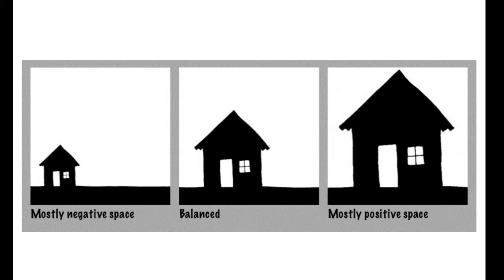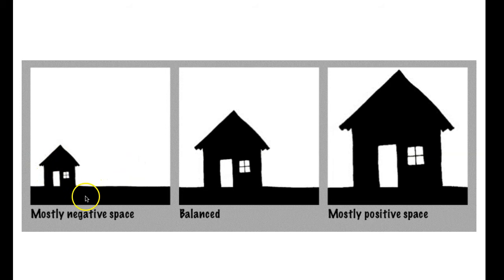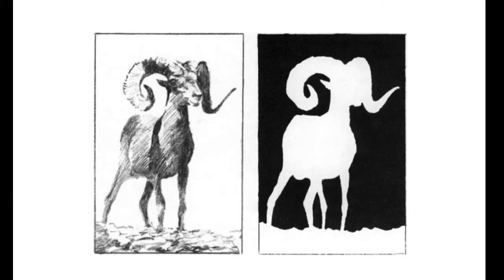There's no right way of doing things — it just depends on what idea you're trying to portray. If you want to focus on the house itself, you'd probably want mostly positive space. If you'd like to focus on the environment or create a feeling of loneliness, mostly negative space would work well. Here you can find the positive and negative space — the main idea is the ram or animal you see here, so that would be your positive space, and everything around it is the negative space.